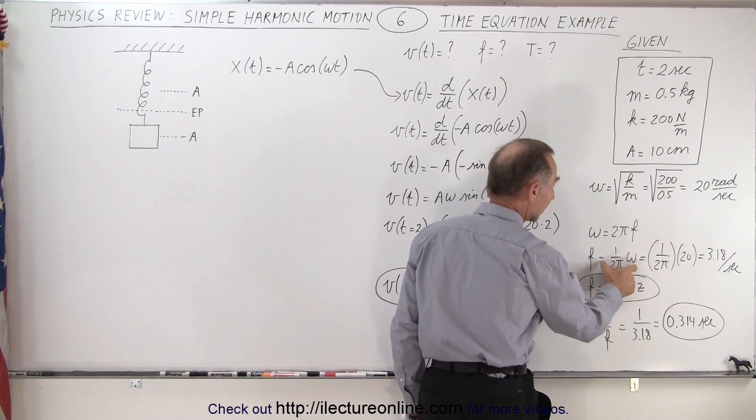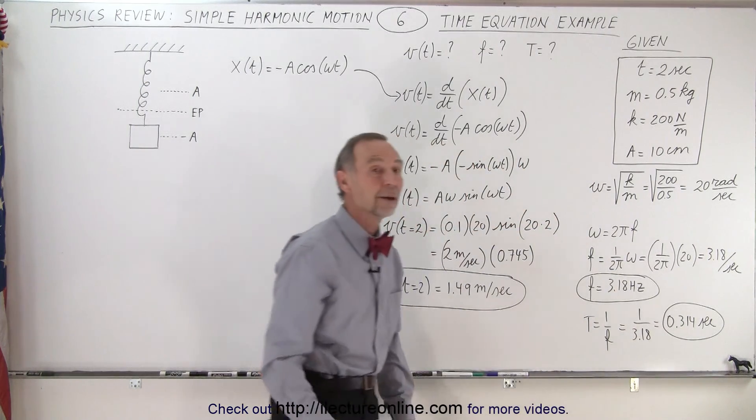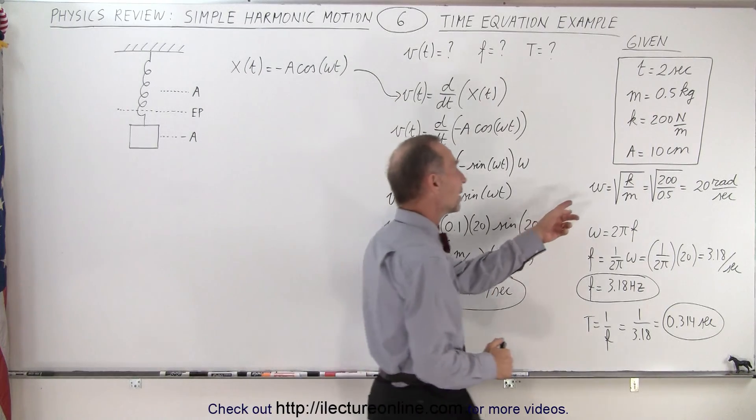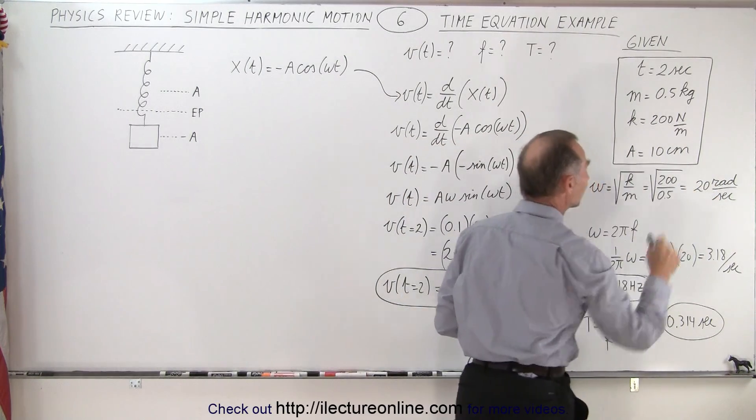So solve it for f, we get this. Plug in the values, we get 3.18 oscillations per second. Notice that the angular frequency is 20 radians per second.